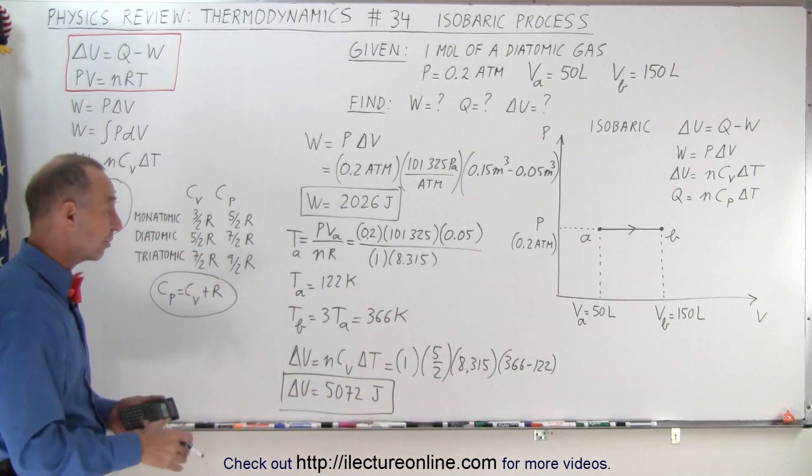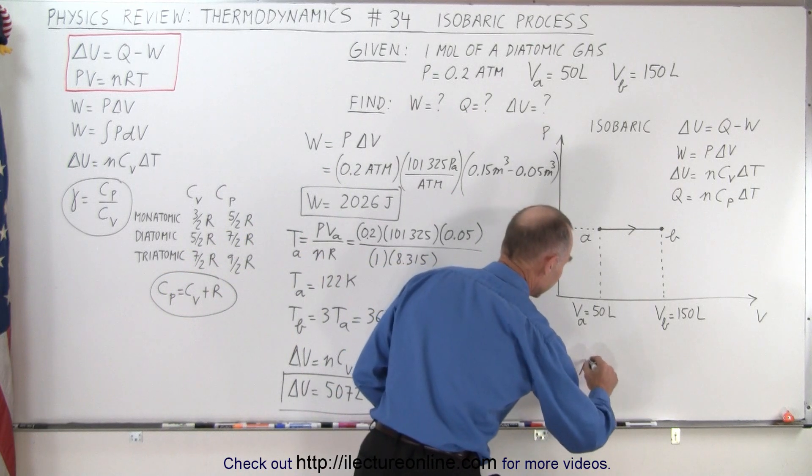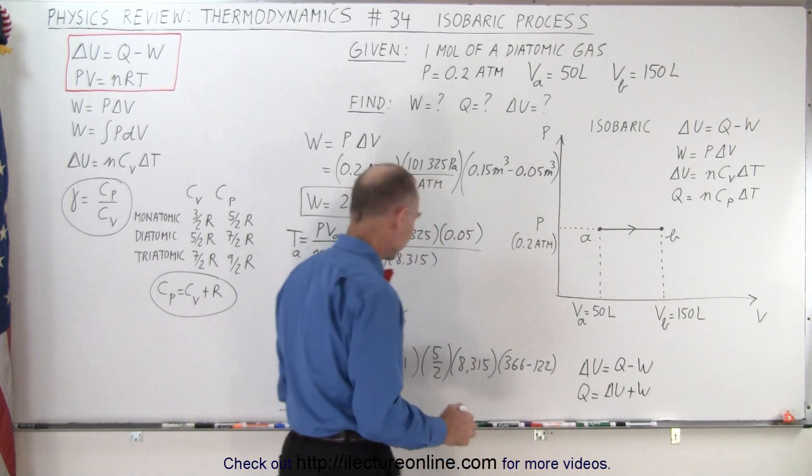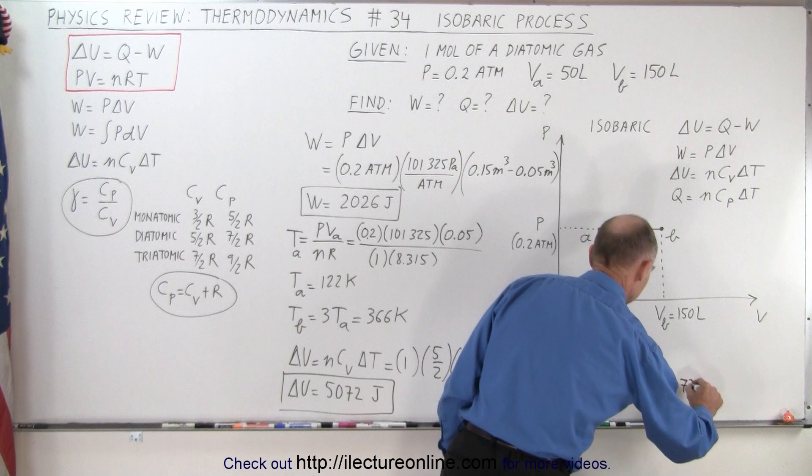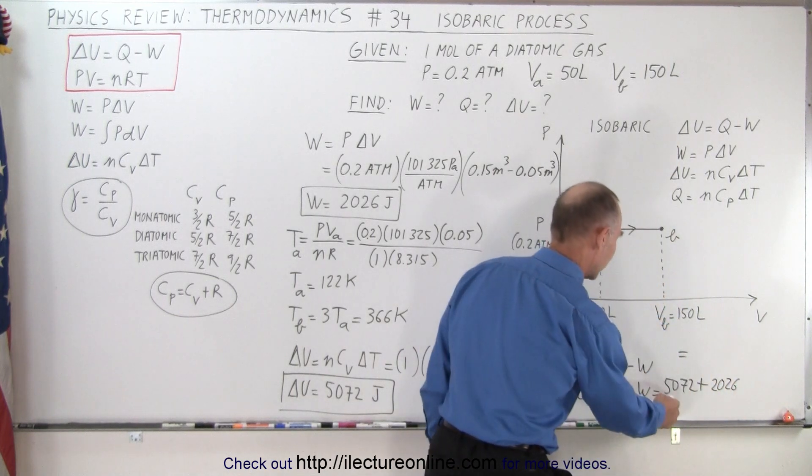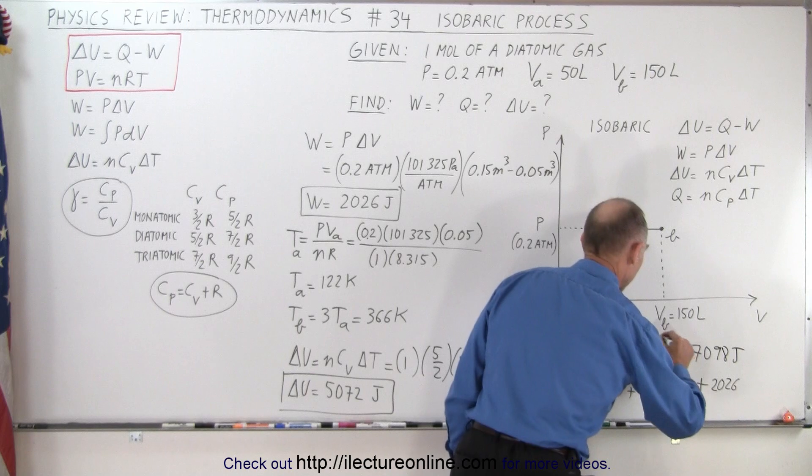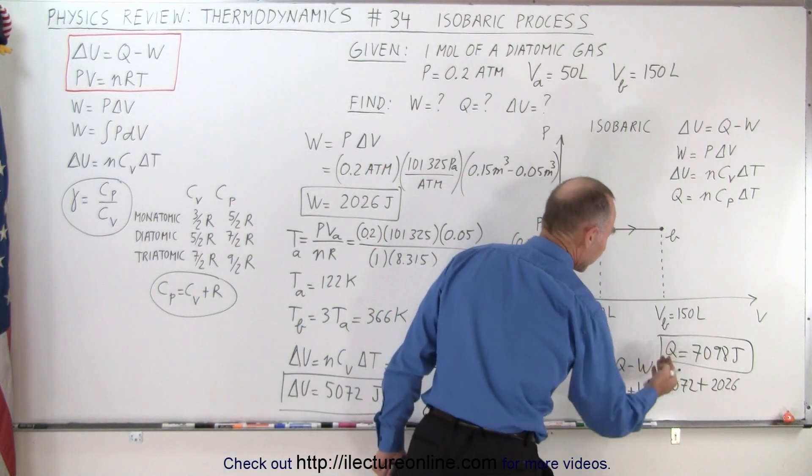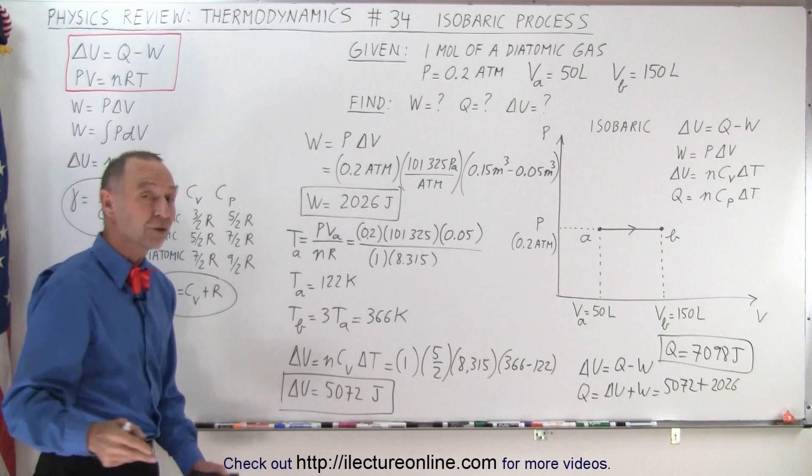Now for Q, heat added to the gas, we can do the same thing. We can say it's n C_p delta T, or we can use the first law of thermodynamics that tells us that delta U equals Q minus W, which means Q equals delta U plus W. In other words, we simply have to add these two together. So it would be 5072 plus 2026, which is 7098. That would be Q. So there's the final answer. In this isobaric process, we added a little bit over 7,000 joules of heat. Part of that was used to do work, and part of it increased internal energy of the gas.